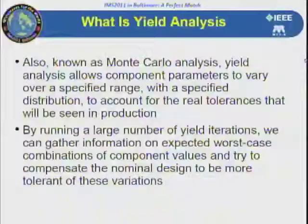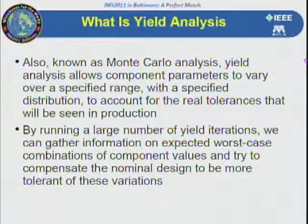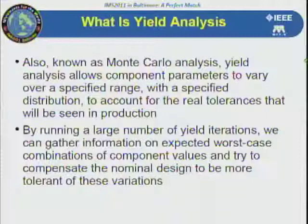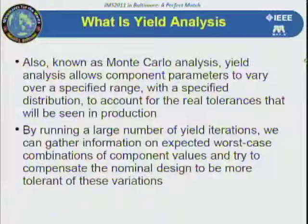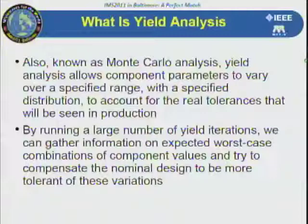The method we're talking about today is traditional Monte Carlo analysis, where you indicate which parameters have statistical variations. You specify the actual parametric variation — is it Gaussian, uniform, or bimodal? For example, if you buy 5% parts, you never get anything between minus 2 and 2 percent because those go into the more expensive bucket. Those are the kinds of things a simulator has to account for, and that's what we do with our Monte Carlo analysis.